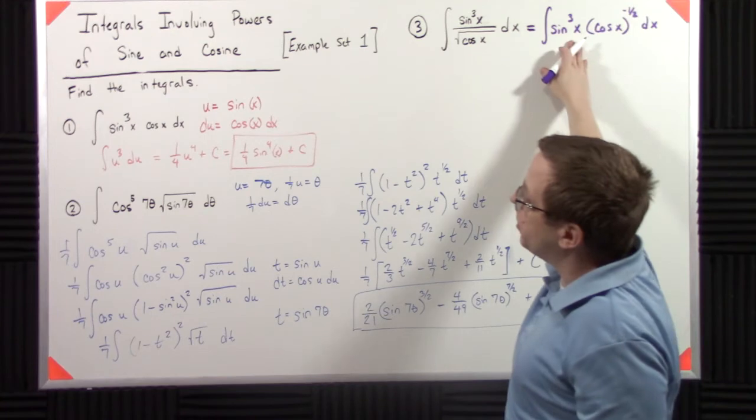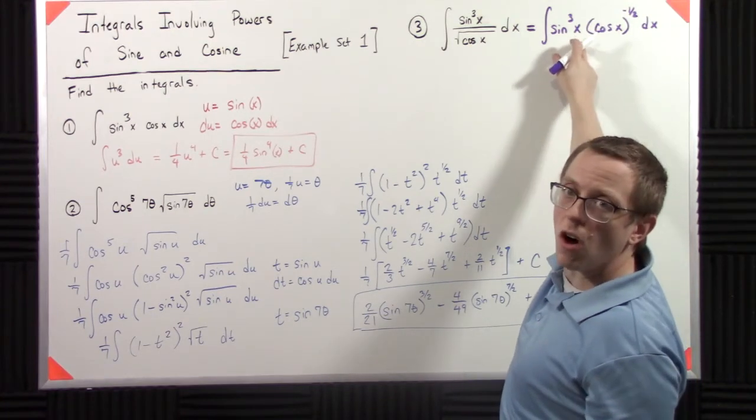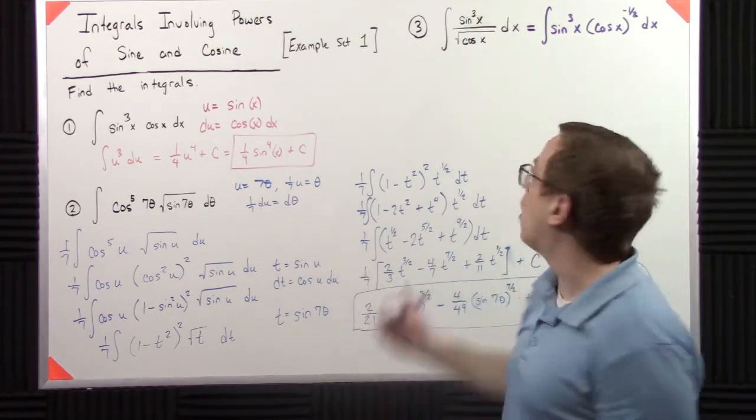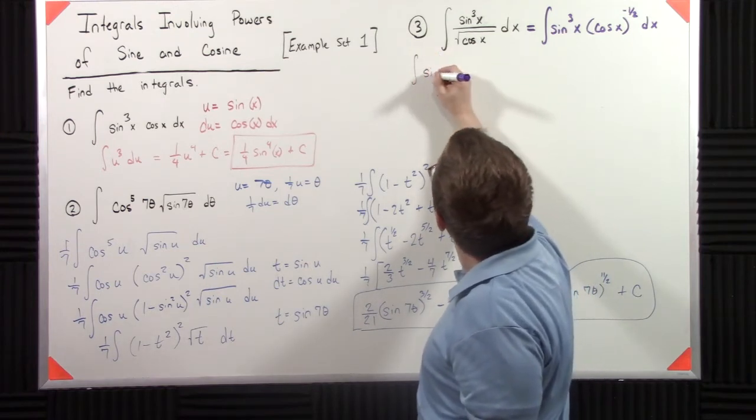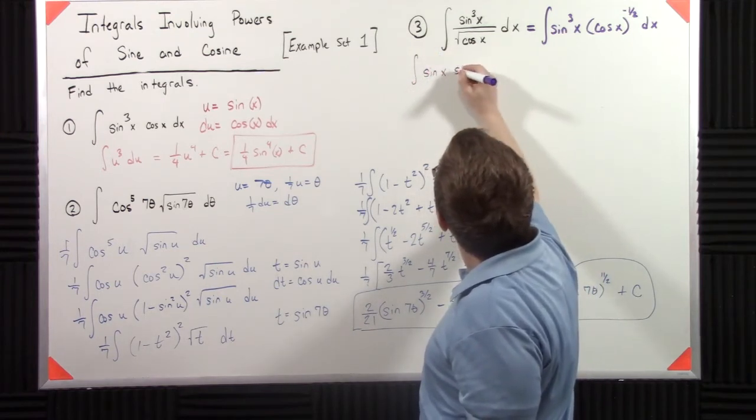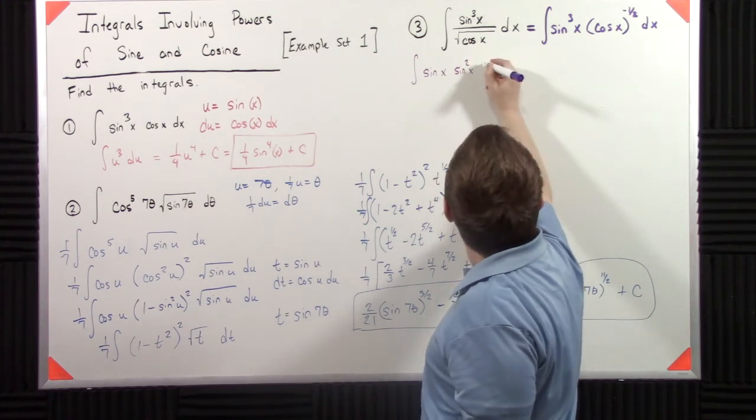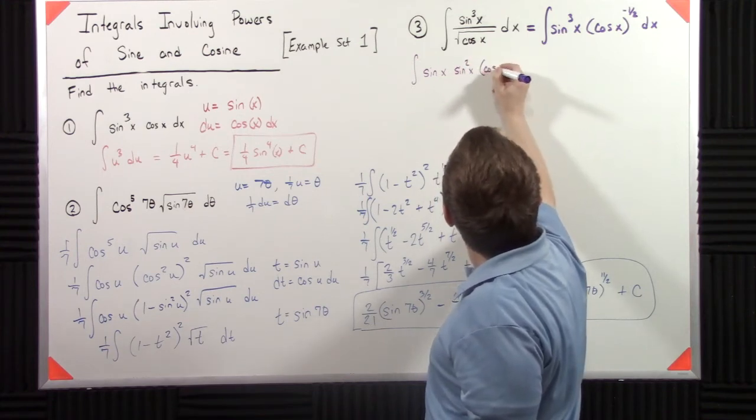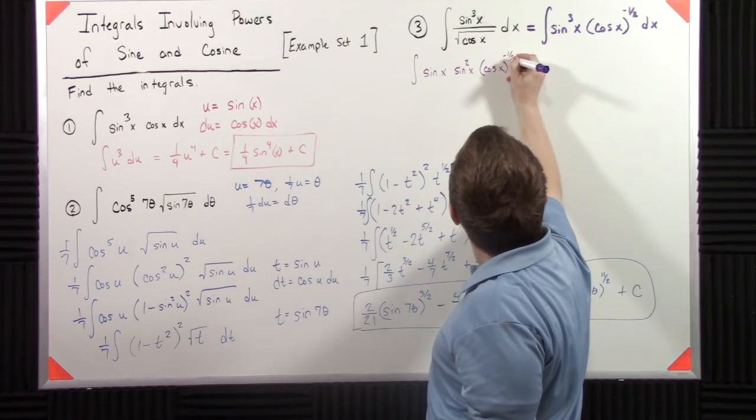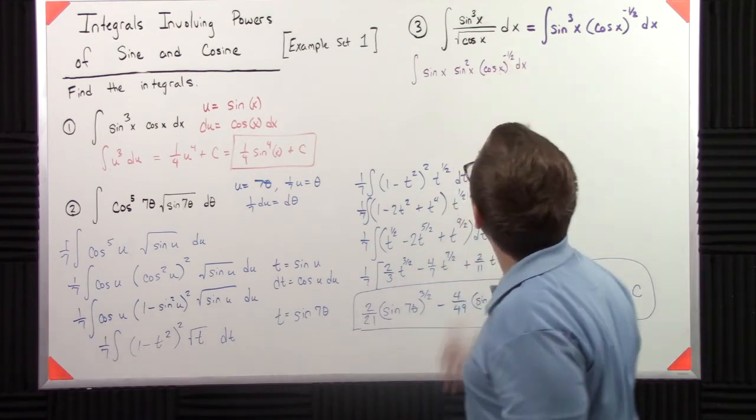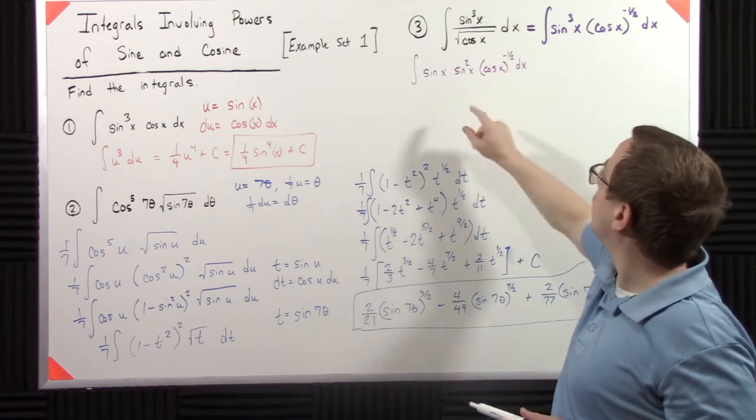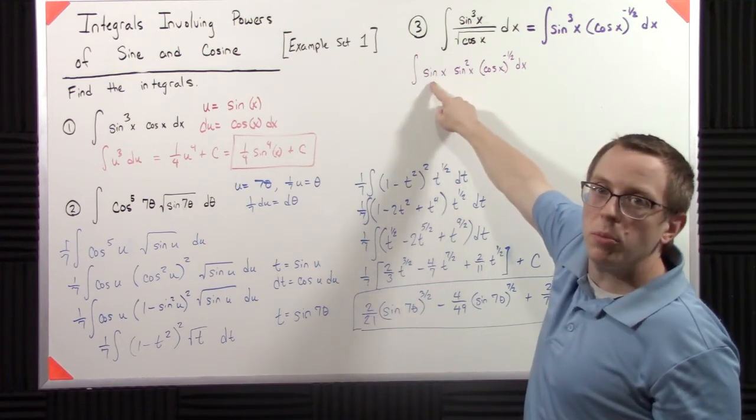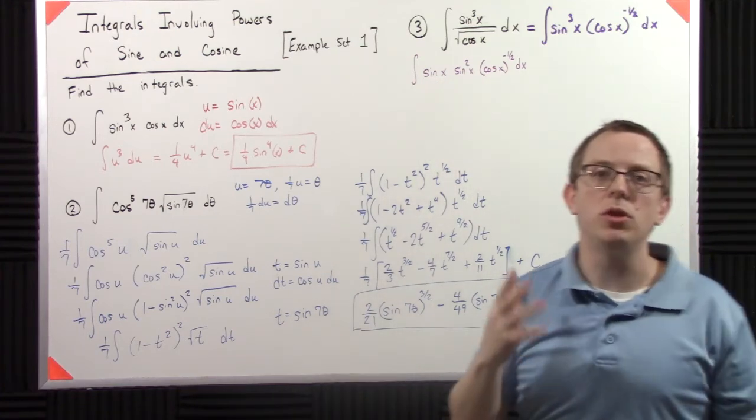So, in this particular case, we do the same idea here. We say that one's odd, so I'm going to split on the odds. So, I have sine x sine squared x times cosine x to the negative one-half. So, I want this sine to be alone, so I need to convert everything else to cosines.